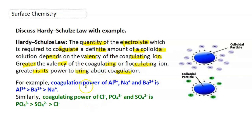For example, a positive ion can coagulate a negative colloid. Similarly, a negative ion can coagulate a positive colloid. Therefore, higher the valency of the ion, higher is the coagulating power.